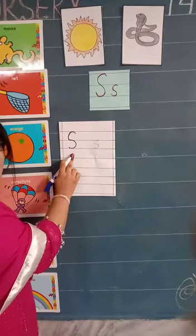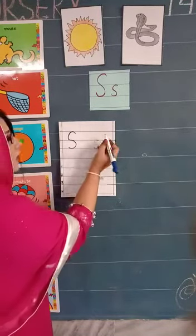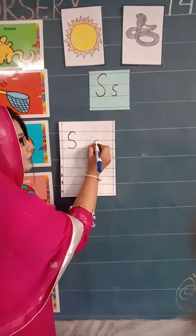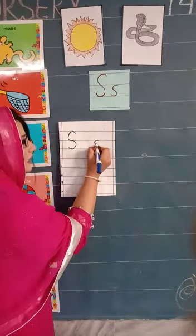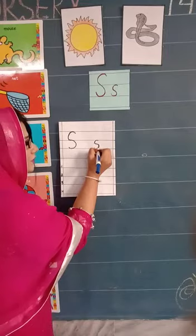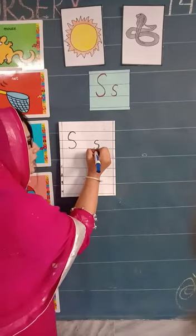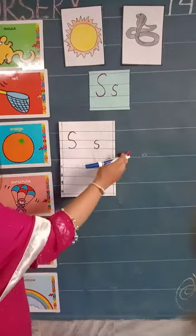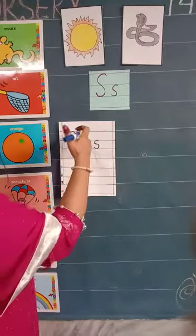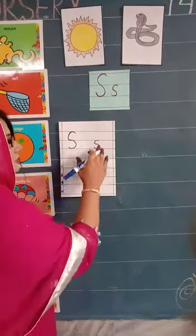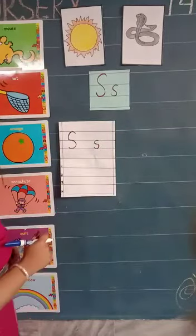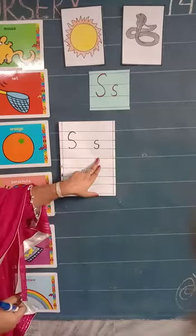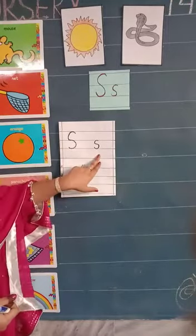What is this? This is capital S. Now how to write small s? We will start from the first dot and draw a semi circle again. Round, round, round, round. And slide up and touch. And we have drawn two semi circles — one on the right and one on the left. This is capital S and this is small s.